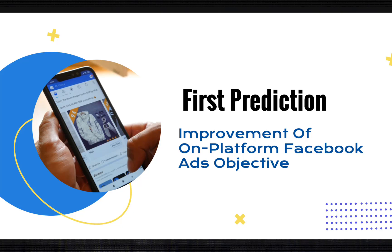Earlier this year I would have told you not to use lead generation ads — just create your own opt-in page and use conversion or traffic objectives. But right now you can use objectives like lead generation ads and Messenger ads, and they work fine. This works because these stay within the Facebook ecosystem — you are not taking users outside the platform. Since the iOS 14 update, Facebook has channeled more energy into building their own on-platform ad experience. Try it out and you will see the difference.